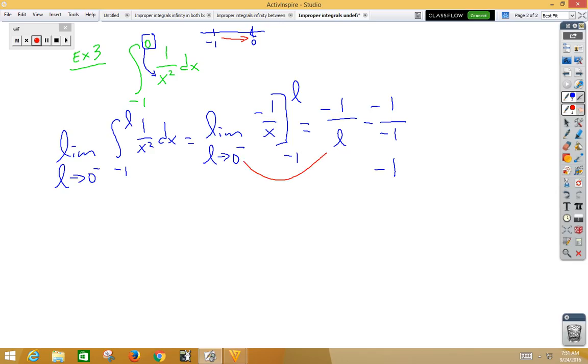Now, we are approaching 0 from the left side. So, in this particular problem, negative 1 over L, that's going to be this picture. And, notice we are heading towards infinity, but we have a negative. So, we have a negative infinity, and this one diverges.